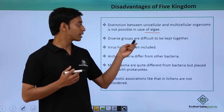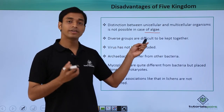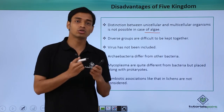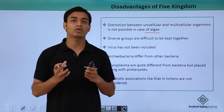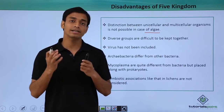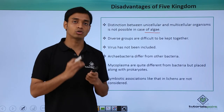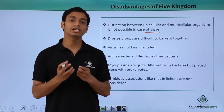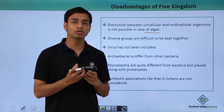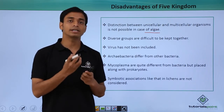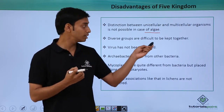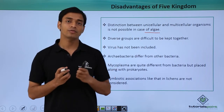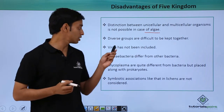A diverse group of organisms is very difficult to be kept together. In various groups, there are diverse organisms included into a particular kingdom. All these diverse groups are very difficult to study and keep under similar conditions or a similar group. This is a big disadvantage of the Five Kingdom Classification System.